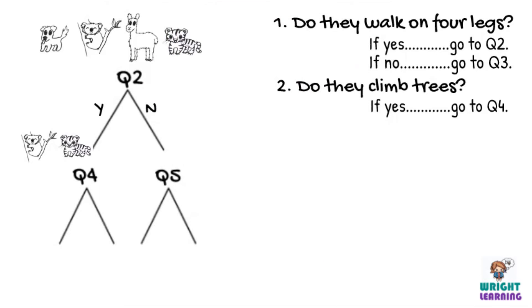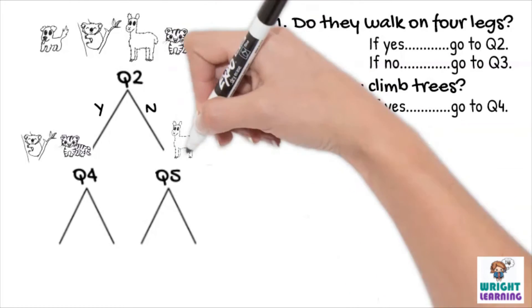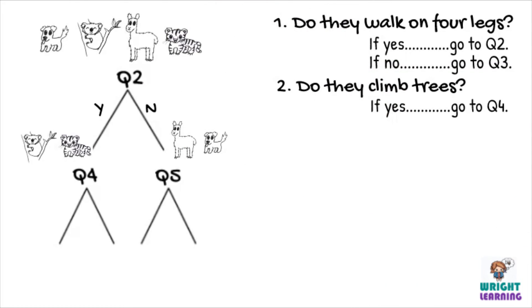You wouldn't expect a dog or an alpaca to climb a tree, so they would form the group on the other side of this part of the tree diagram. So under question 2 in our written dichotomous key, we can also write, if no, go to question 5.